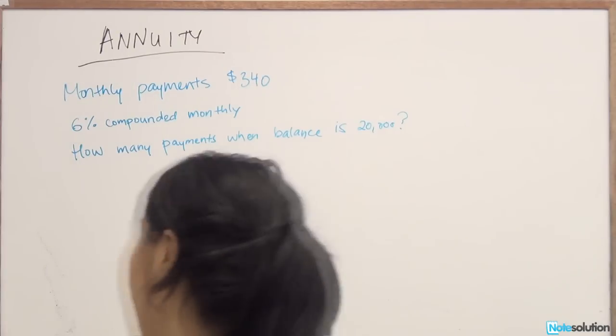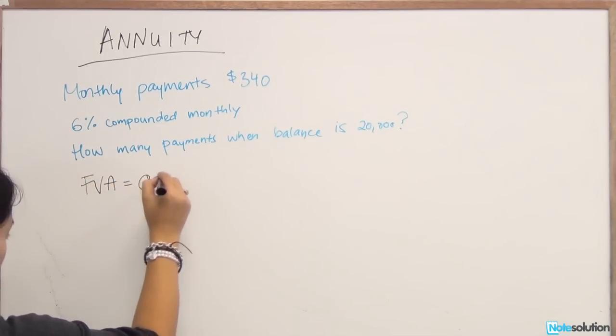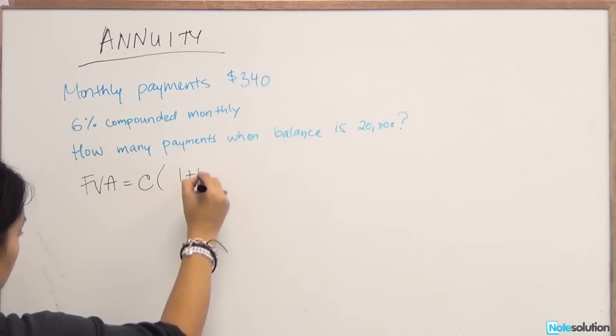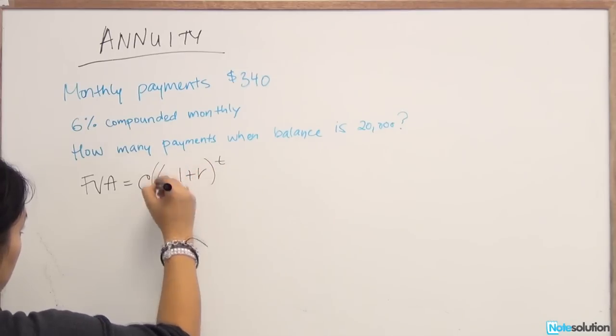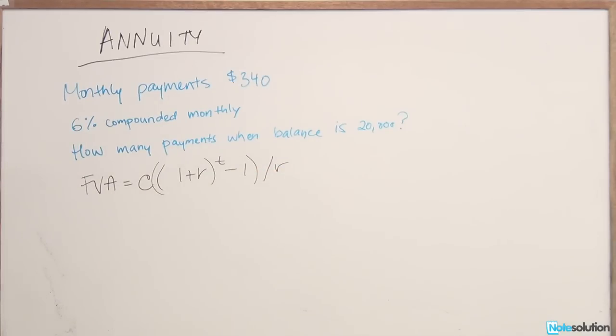So really you want to use your future value of the annuity formula. Why do we want to use the future value of annuity formula? Well because at some point, not now, but at some time in the future, the account is going to be worth $20,000. And because it's not now, it is in the future, then it's the future value of the annuity.